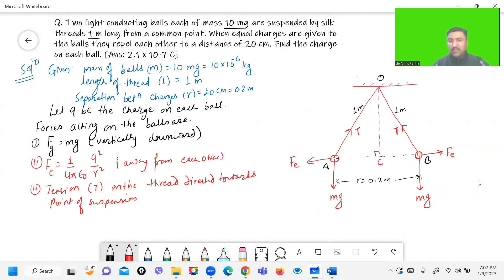R dash equals 0.1 meter. Let's find out angle theta AOC. The angle theta AOC will be sine theta equal to perpendicular upon hypotenuse, it's R dash by length L, 0.1 by 1. So angle theta equals sine inverse 0.1 which will be equal to 5.73 degrees.